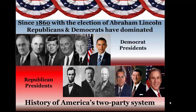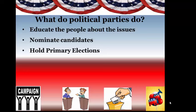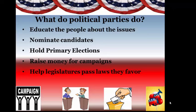What do political parties do? They educate the people about the issues — they tell us what's going on and try to steer us in how we should feel about them. They nominate candidates, which is a huge help; imagine if anyone who wanted to be president could run — you'd have thousands of candidates. These parties narrow it down to two big candidates. They hold primary elections to weed down to one candidate per party. They raise money for campaigns, help legislatures pass laws, and write the party platform — coming up with the big ideas for their party.